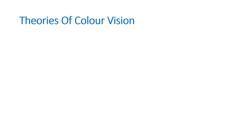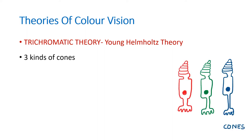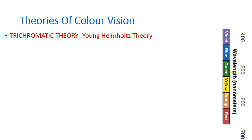The first theory of color vision is the trichromatic theory, also called Helmholtz's theory. According to this theory, there are three kinds of cones, one for each primary color, and each has a different photopigment sensitive to a particular wavelength. The three primary colors are red, green, and blue, so there are three different cones corresponding to each of these colors.